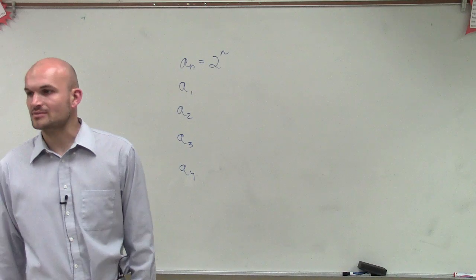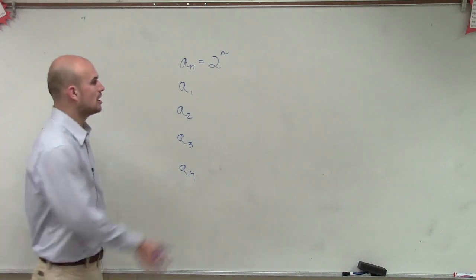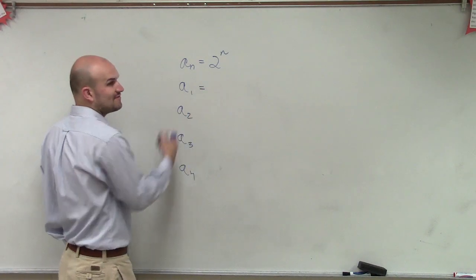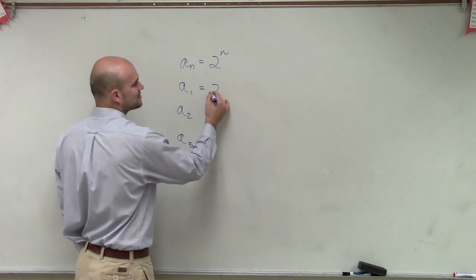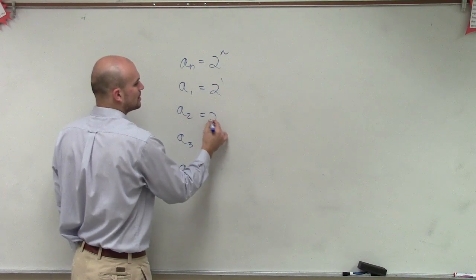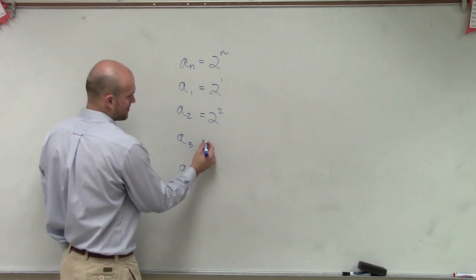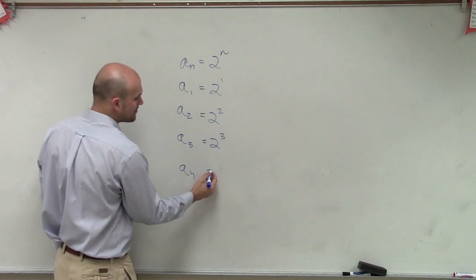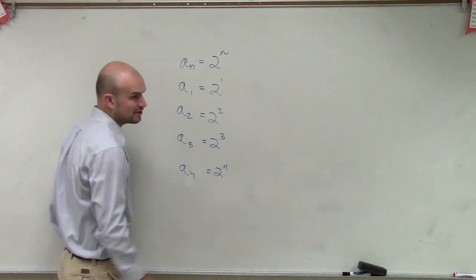So just like we talked about before, when we have our term, we're just going to plug in that value in for our variable. So we'll have 2 to the first power, 2 to the second, 2 to the third, and then 2 to the fourth.